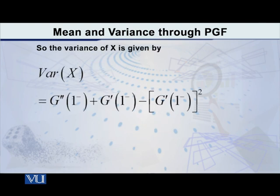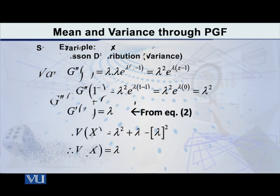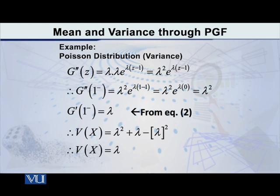As far as the variance is concerned, the formula is: variance of x equals g double prime of 1 minus, plus g prime of 1 minus, minus the square of g prime of 1 minus. Here g double prime means we take the second derivative. For the Poisson distribution, the second derivative of the PGF comes out to be lambda squared times e raised to lambda(z minus 1). As z tends to 1 from the left, g double prime of 1 minus comes out to be lambda squared, because the exponential part becomes e raised to 0, which equals 1.